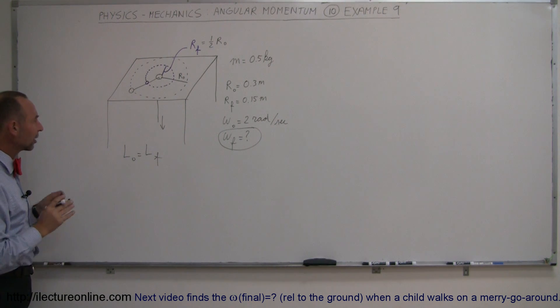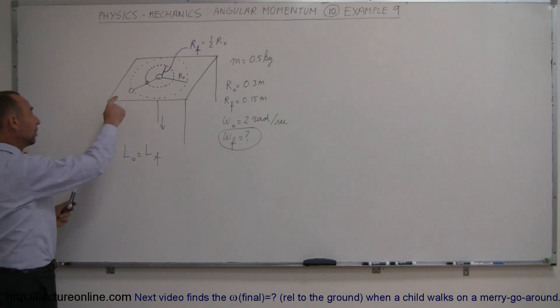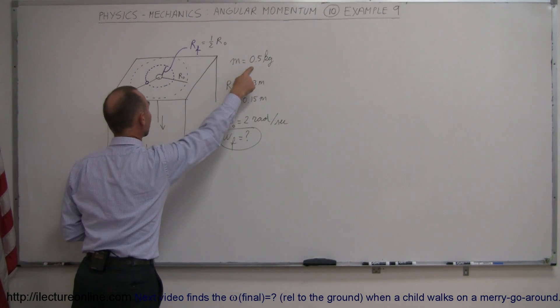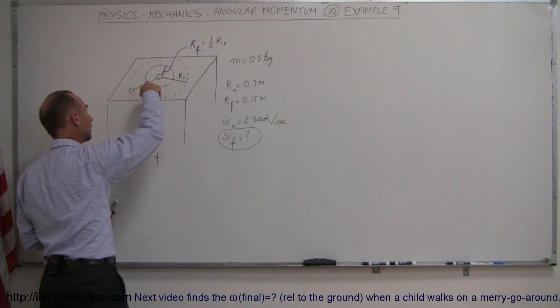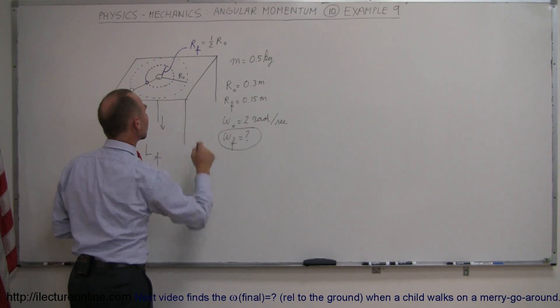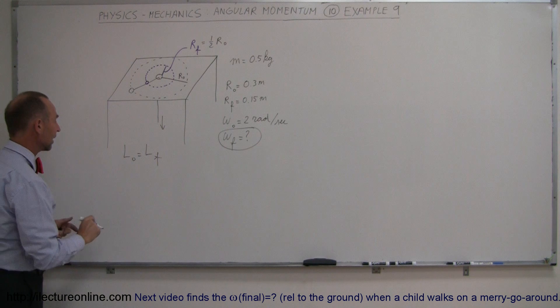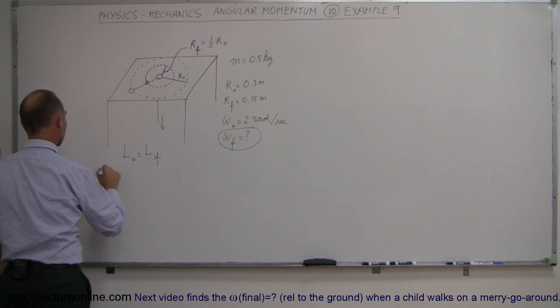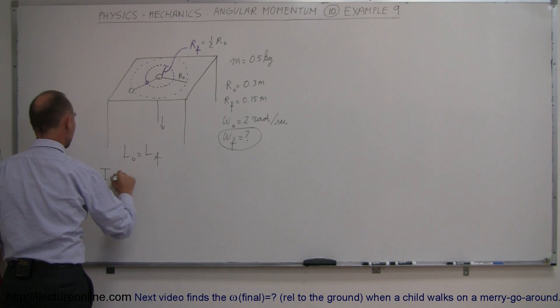So what makes up the initial angular momentum of this situation? Well, we have a puck, mass half a kilogram, revolving around that hole at an angular velocity of 2 radians per second when the radius is 0.3 meters. So we can say that the angular momentum initially is I times omega initial.